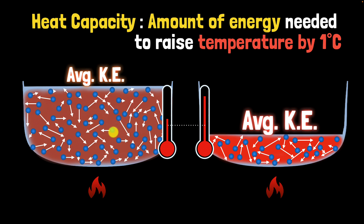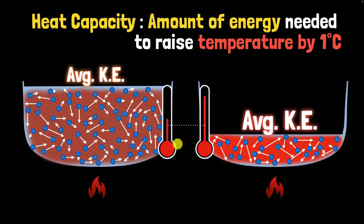We just saw that the larger vessel takes a lot of energy to raise the temperature by one degree Celsius, because there are a lot of molecules over here — therefore it has a higher heat capacity. The smaller vessel, since there are very few molecules, takes only a little bit of energy to raise the temperature by one degree Celsius, so it has a lower heat capacity. In other words, if you have a bigger mass you have a higher heat capacity, and if you have a smaller mass you have a lower heat capacity.